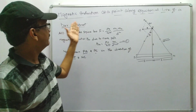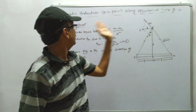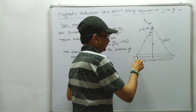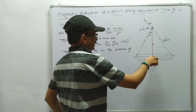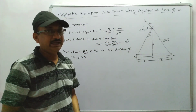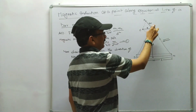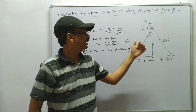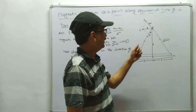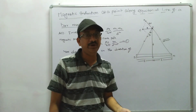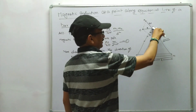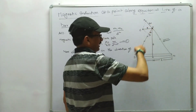Today I am going to discuss the magnetic induction at a point along the equatorial line of a bar magnet. Let us examine a bar magnet — this is the south pole and this is the north pole. If you draw a perpendicular line from its midpoint, this line is called the equatorial line. We consider a point P on this line. The north pole acts on P in one direction and the south pole acts on P in another direction.